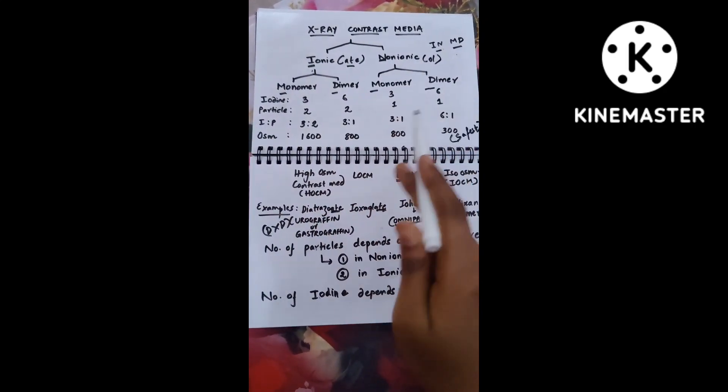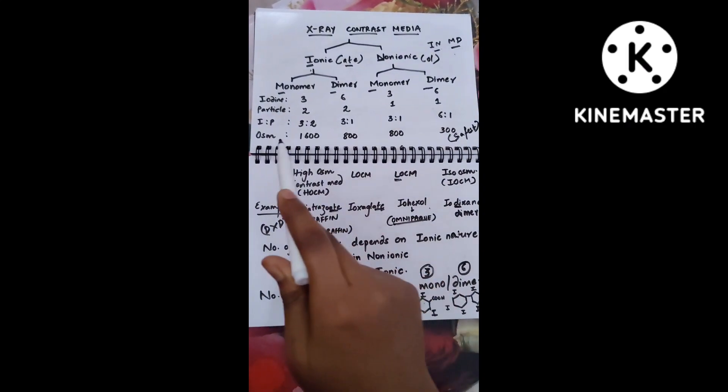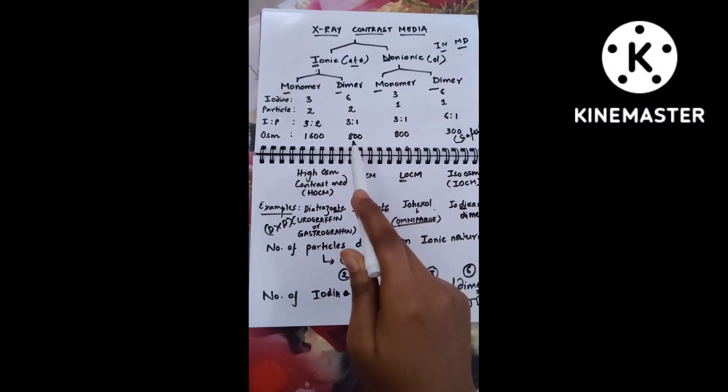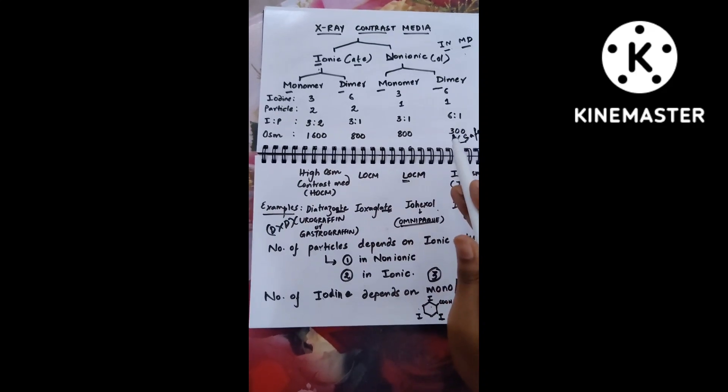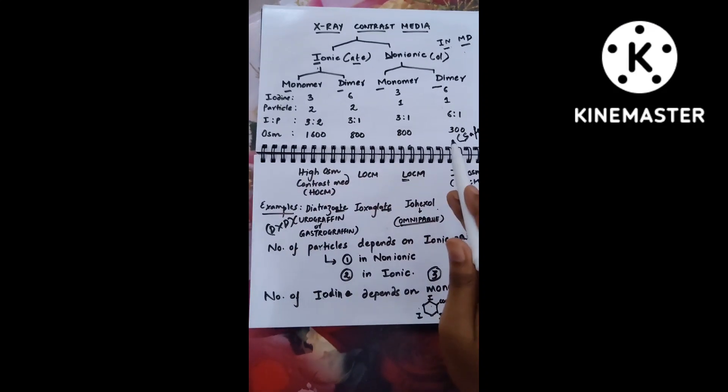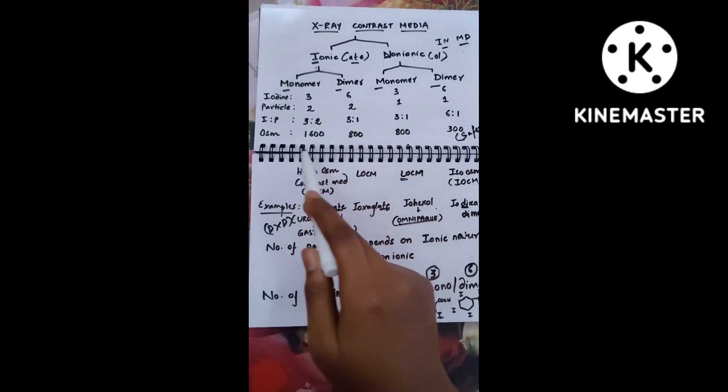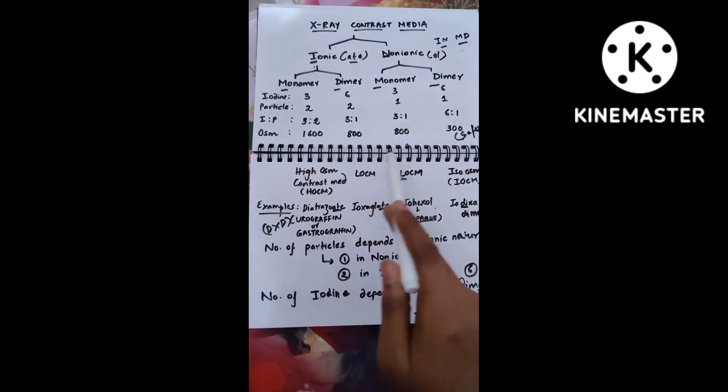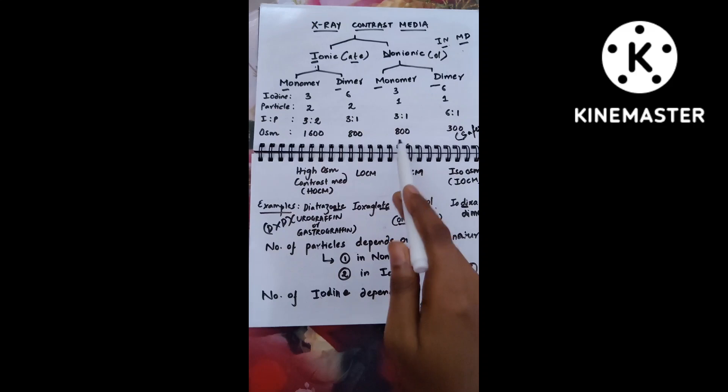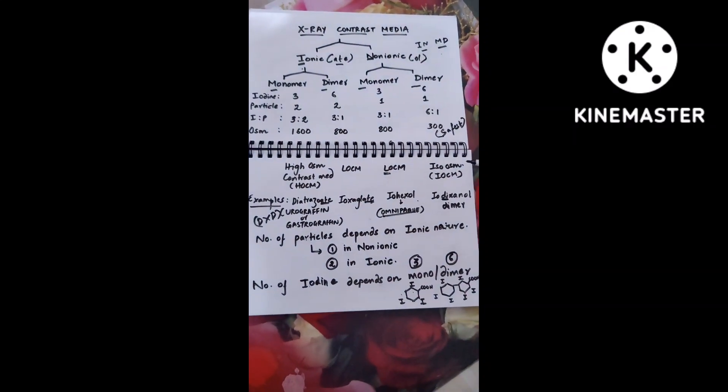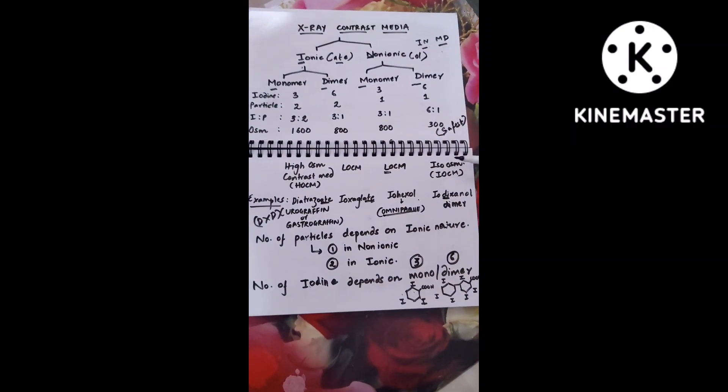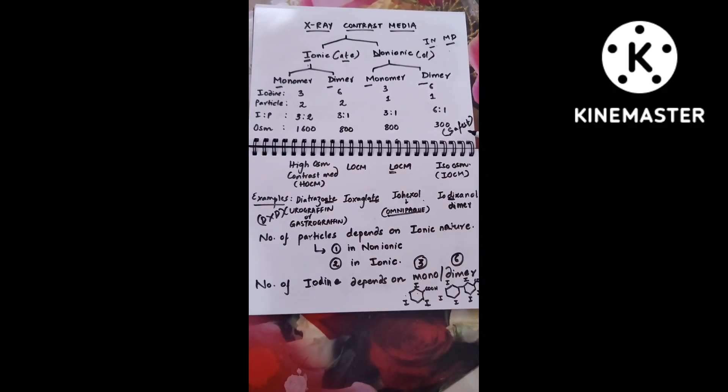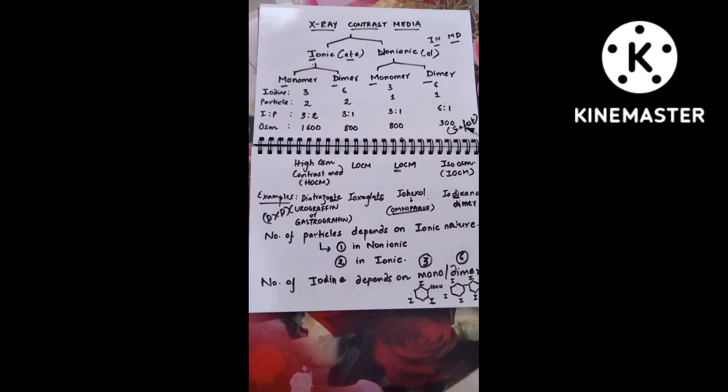Now comes the osmolality. Decrease the osmolality in the same order: 1600, then comes the half 800, then start with 800 and end with 300. Since 1600 is the highest, it's high osmolar contrast media (HOCM). These two having 800 are low osmolar contrast media, and the last one is iso-osmolar.